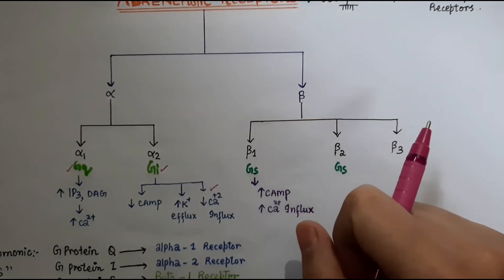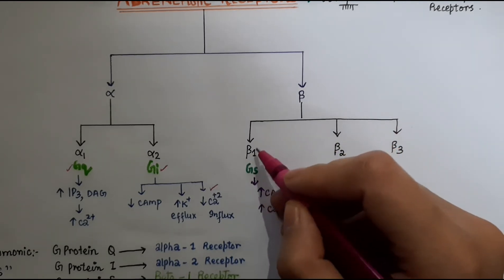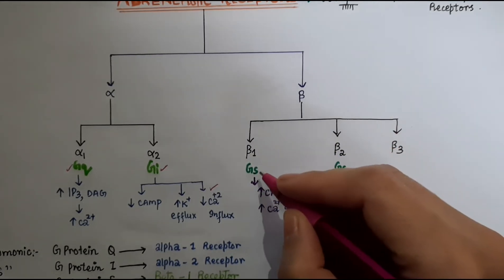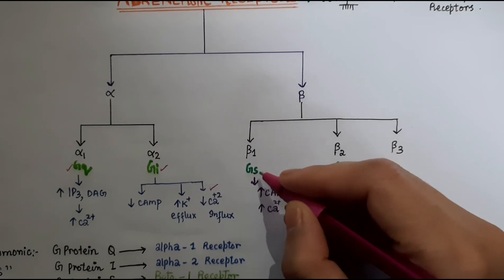Now, the beta receptors are beta-1, beta-2, and beta-3. Beta-1 is G-stimulatory.